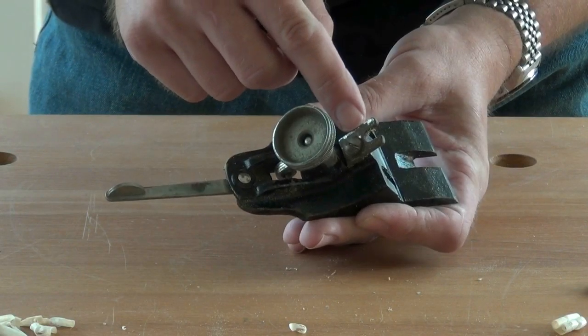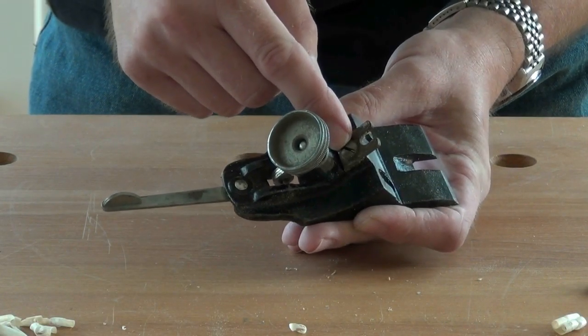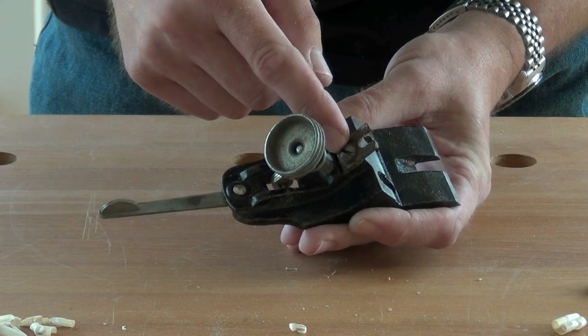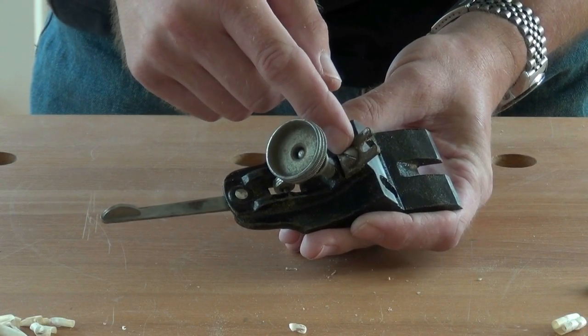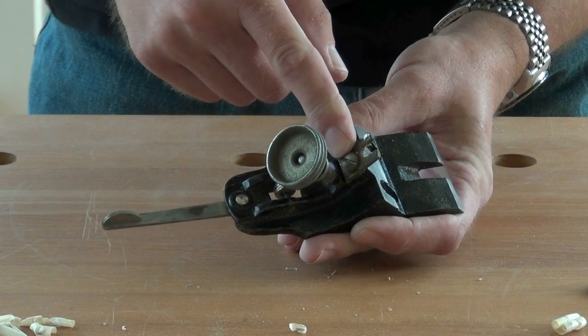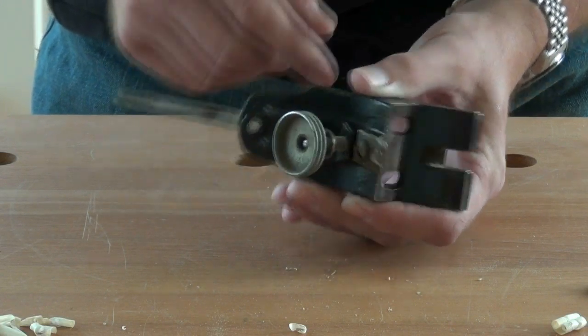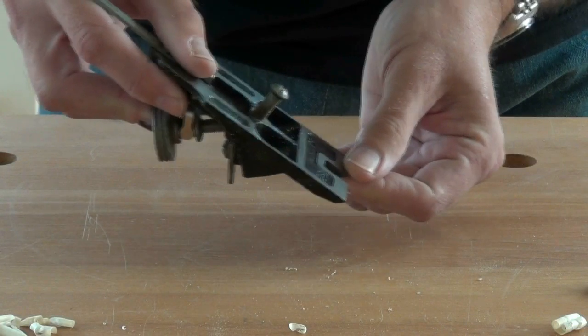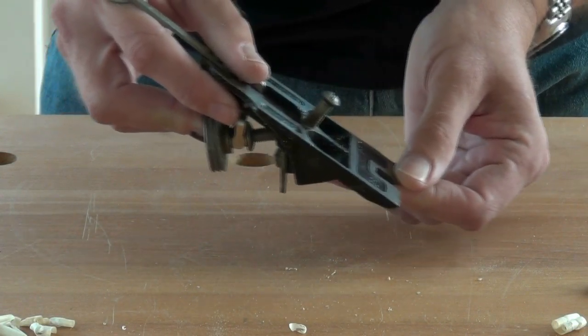And there's this U-shaped plate screwed to the back of the frog which engages in an adjustment screw in the body of the plane to move the frog backwards and forwards in the body of the plane.